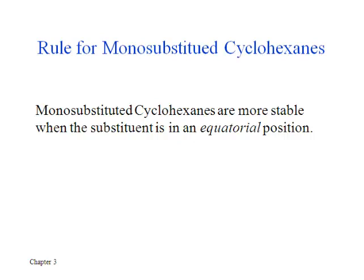What we're going to talk about for the rest of this chapter are not monosubstituted cyclohexanes, where we could always assume that axial arrangement, but the situation when we have disubstituted cycloalkanes. In those cases, we've got two substituents to keep up with, and so we want to be able to deal with those situations as well.